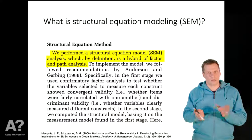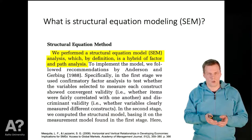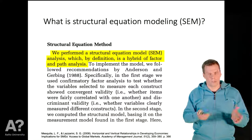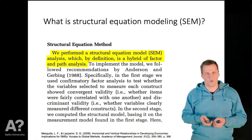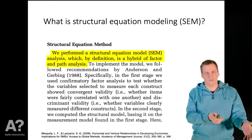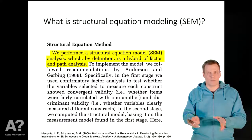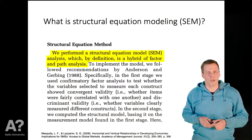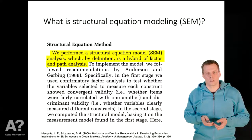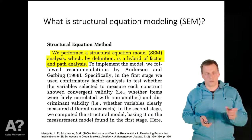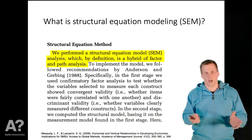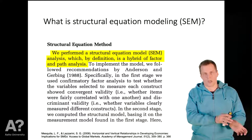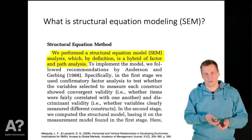Path analysis is basically just a regression analysis where there are multiple equations. For example, when you do a mediation model using the simultaneous equations approach, that would be called a path analysis. So path analysis is just regression with observed variables, except that there are more than one dependent variable. Factor analysis checks what different indicators have in common and whether we can group those indicators as measures of the same concept.